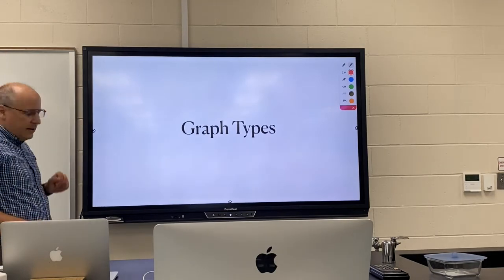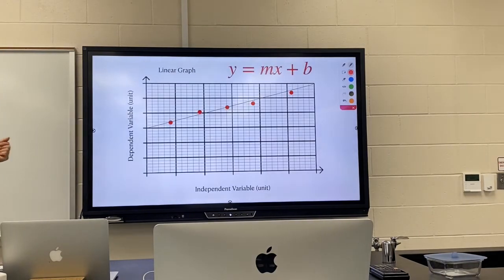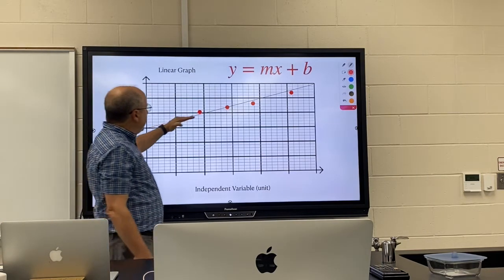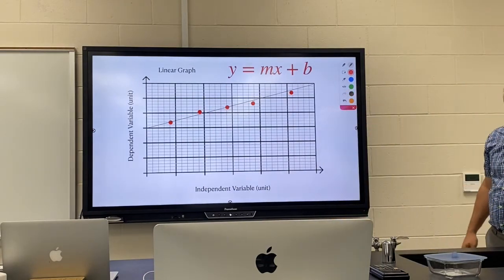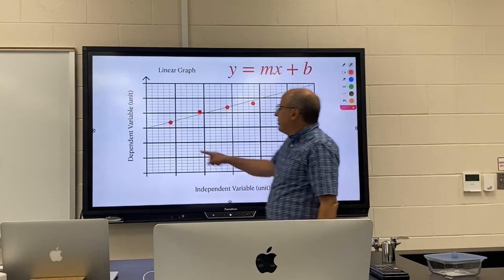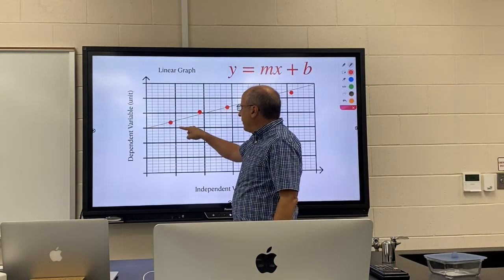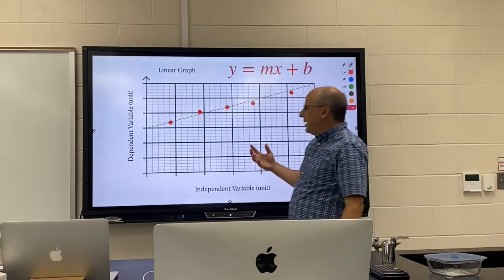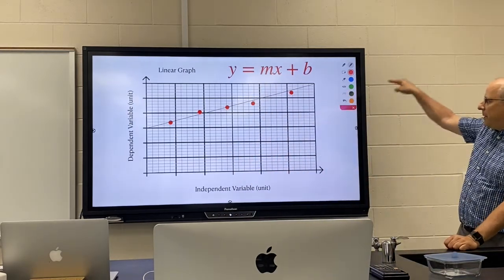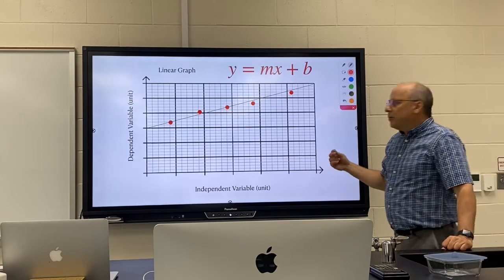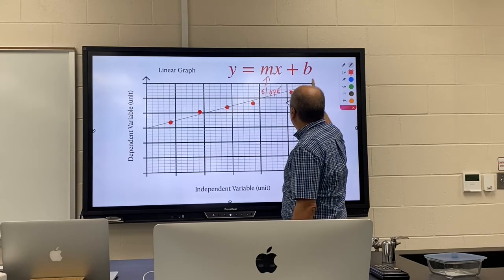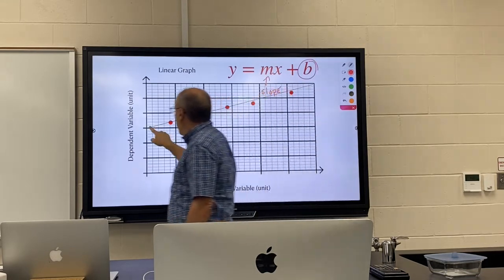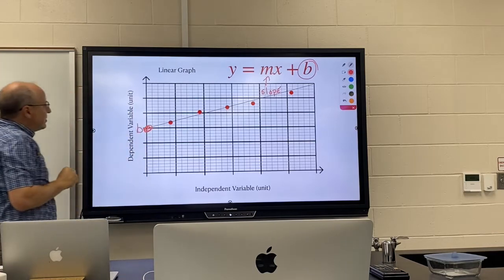So for today, two that you have to worry about. The first type is called a linear graph. A linear graph is where the points go upward at a constant rate. So every time you move over five blocks this way, you go up about two and a half blocks on the y. It goes up at a constant rate. The rate at which it climbs is called the slope.